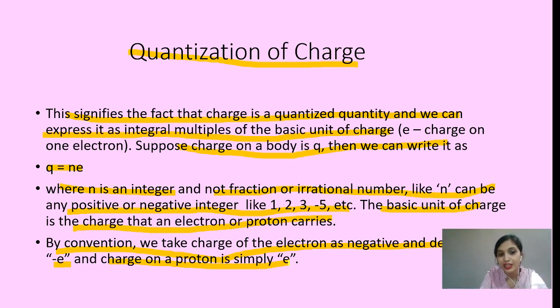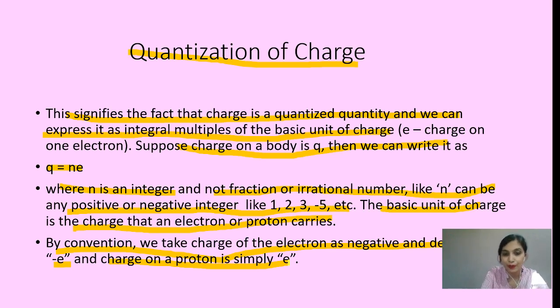So, n is an integer — it cannot be a fraction number, irrational number, but can be negative or positive in integer form.